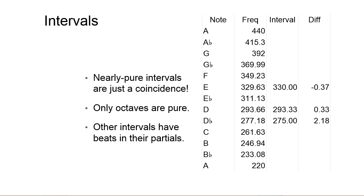That's because those overtones are almost coinciding with each other. They don't quite coincide because of math, science, and the 12th root of 2, but they almost coincide. You can use those almost-coincidences and listen to those overtones if you train your ear, and then you can tune your guitar or any other instrument.